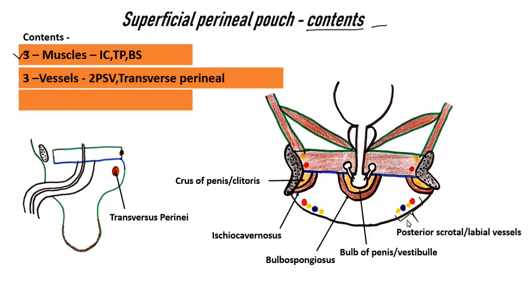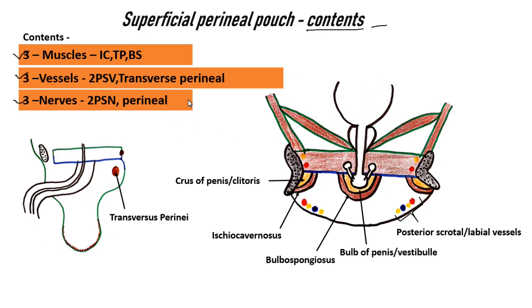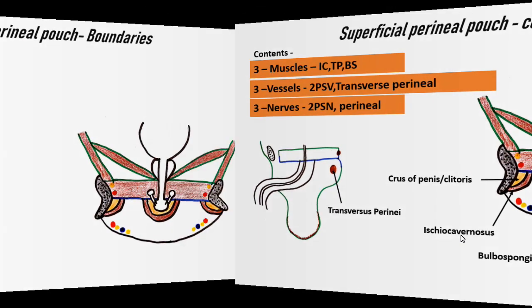Then we have three vessels: two posterior scrotal vessels or labial vessels, and one is the transversus perineal vessel. And three nerves: two posterior scrotal nerves and one is the perineal nerve. These are the contents of the superficial perineal pouch.